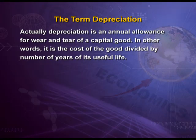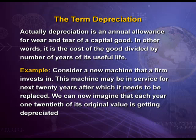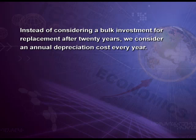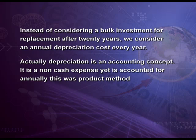We used the term depreciation. Let us understand its meaning. Depreciation is an annual allowance for wear and tear of a capital good. In other words, it is the cost of the good divided by the number of years of its useful life. For example, consider a new machine that a firm invests in. This machine may be in service for the next 20 years, after which it needs to be replaced. We can imagine that each year one-twentieth of its original value is getting depreciated. So instead of considering a bulk investment for replacement after 20 years, we consider an annual depreciation cost every year. Depreciation is an accounting concept — it is a non-cash expense yet is accounted for annually. This was the product method.